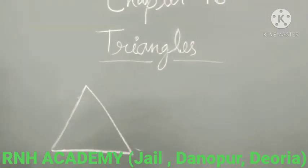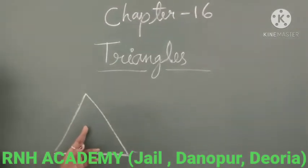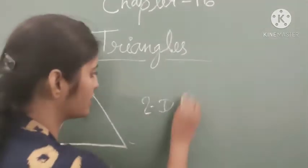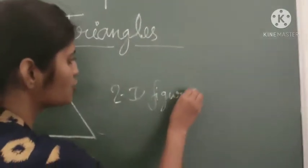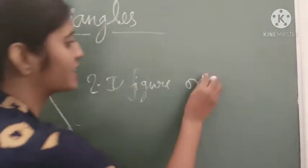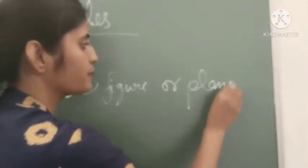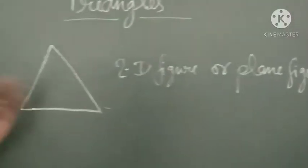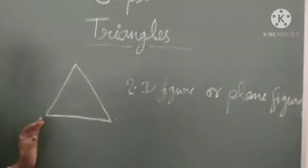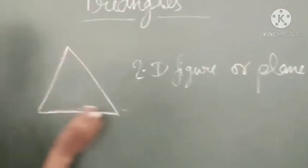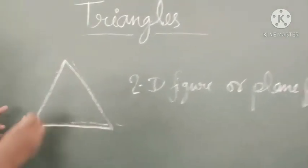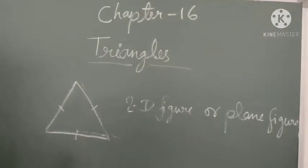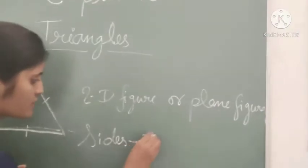This is the figure of a triangle. First of all, a triangle is a 2D figure — that means a 2-dimensional figure, or we can say a plane figure. Triangle is a 2D figure. So, a triangle has 3 sides. You can see that a triangle has 3 sides: 1, 2, 3.